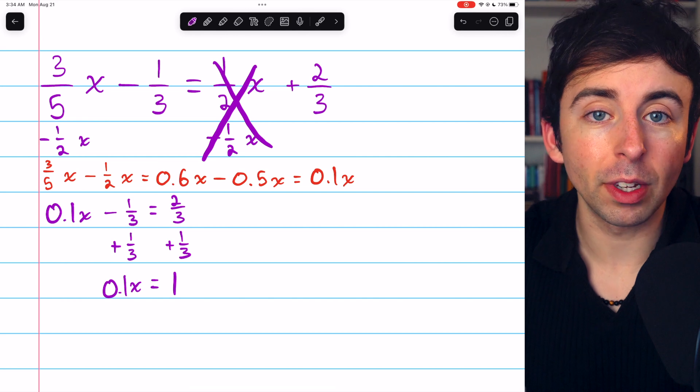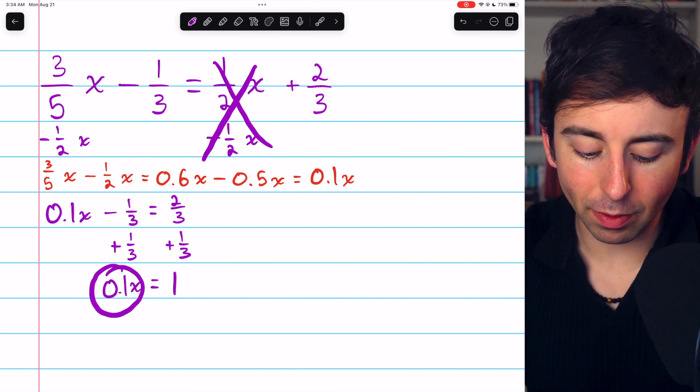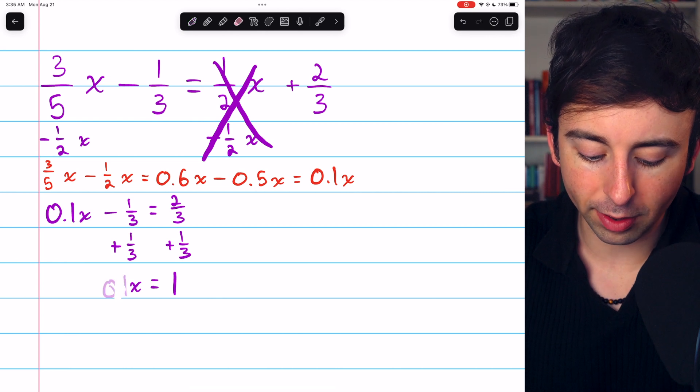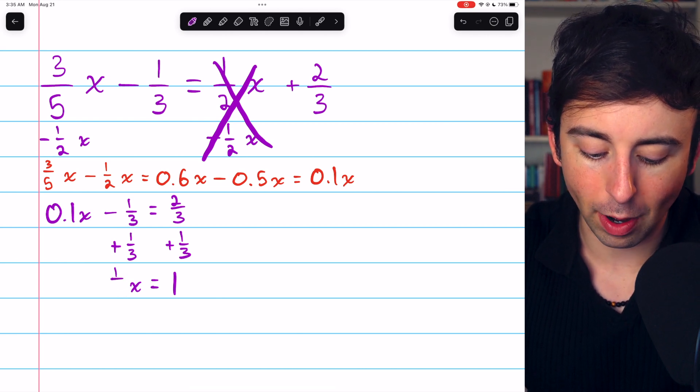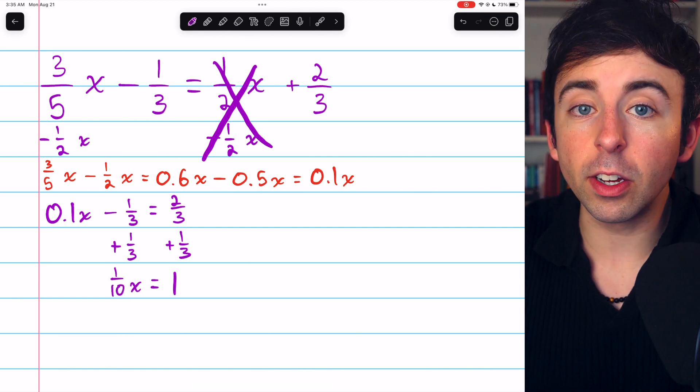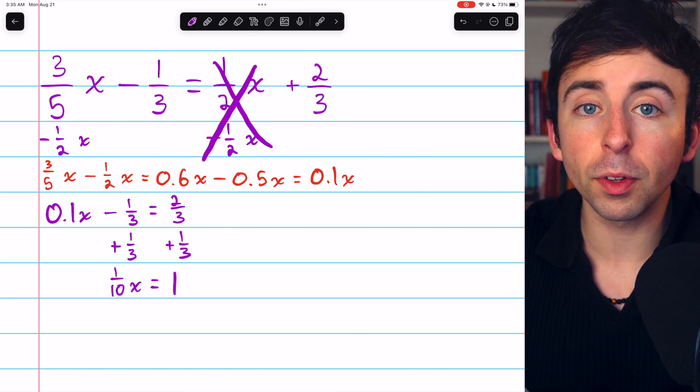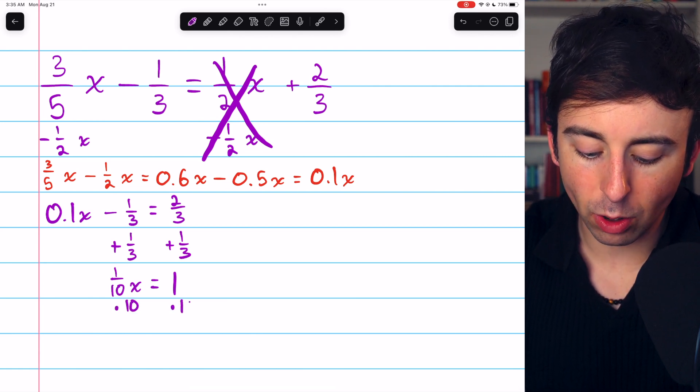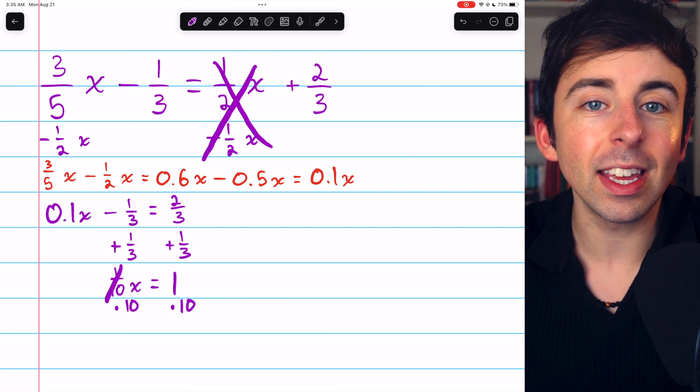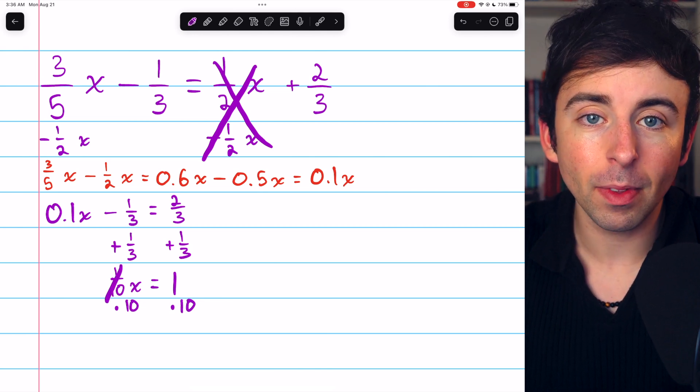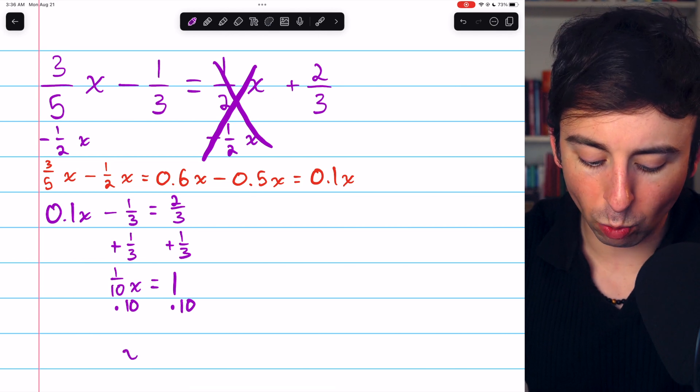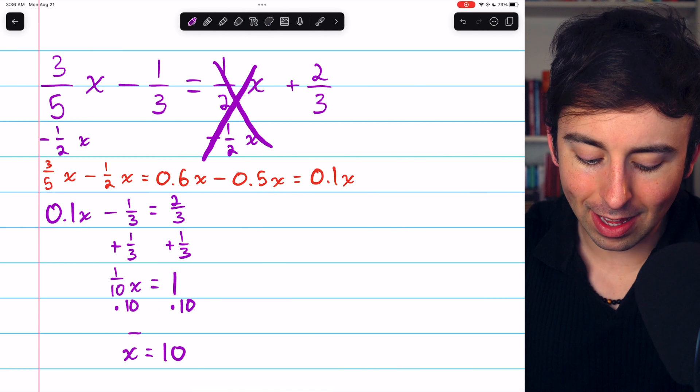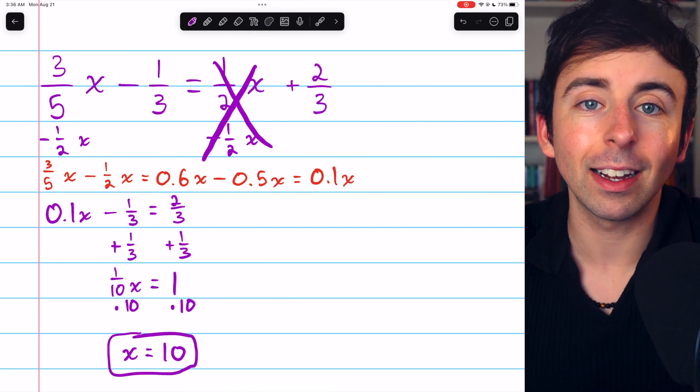Finally, we can finish solving for x. We just need to get rid of this coefficient of 0.1. Since dealing with fractions is part of the focus of this lesson, let me write the 0.1 as a fraction, 1/10. Then you can see that we could simplify this by just multiplying both sides of the equation by 10. If we multiply both sides by 10, that's going to cancel out with the 1/10 on the left, because 1/10x times 10 is 1 whole x. On the right, 1 times 10 is 10, and thus we have our solution x equals 10.